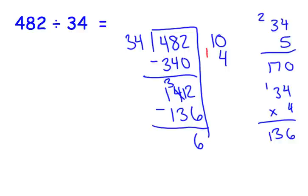Let's go add our partial quotients. 0 plus 4 is 4, and 1 in the tens place. So, the final answer is 14 with a remainder of 6.